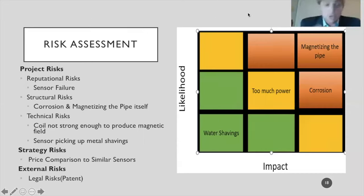We have identified several risks associated with this project. We identified the reputational risk as once the sensor is assembled, that it unexpectedly fails, which would look bad on both the company Meyer and our capstone group. We identified the structural corrosion of the sensor and coil itself, as well as the magnetization of the pipe itself. If the pipe is magnetized, the wireline going through the pipe will stick to the side and not go down into the well. The technical risks are that the coil is not strong enough to produce a magnetic field inside the pipe itself. We need a magnetic field that is strong enough to pierce the steel pipe and stay within the pipe.